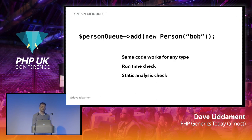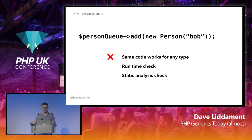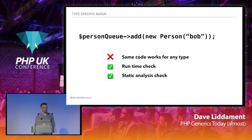Let's think of the pros and cons of this approach. Unfortunately, the same code doesn't work for any type — we have to create our own class for each type of data we want to hold. But we do get runtime checks, and we can apply static analysis to this.